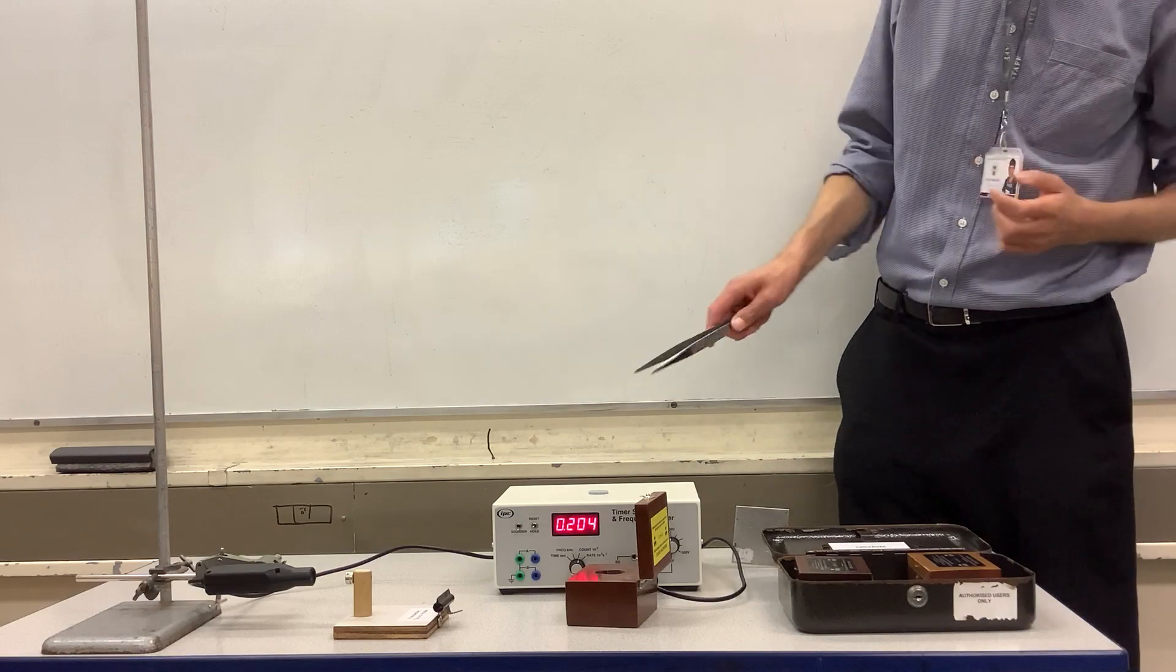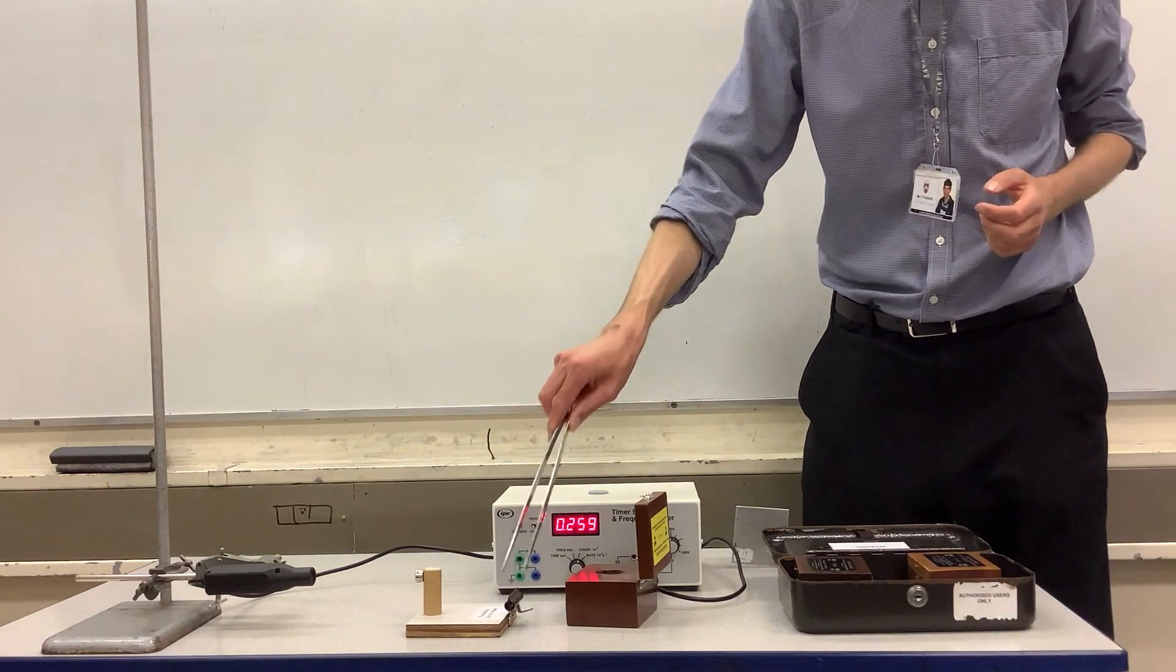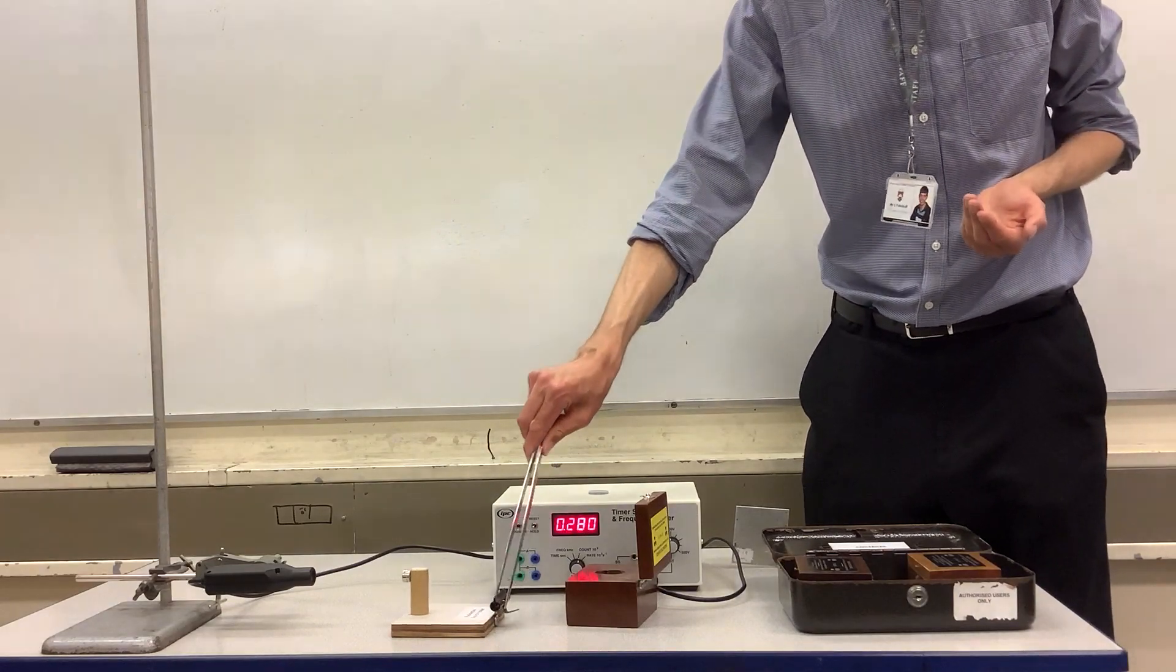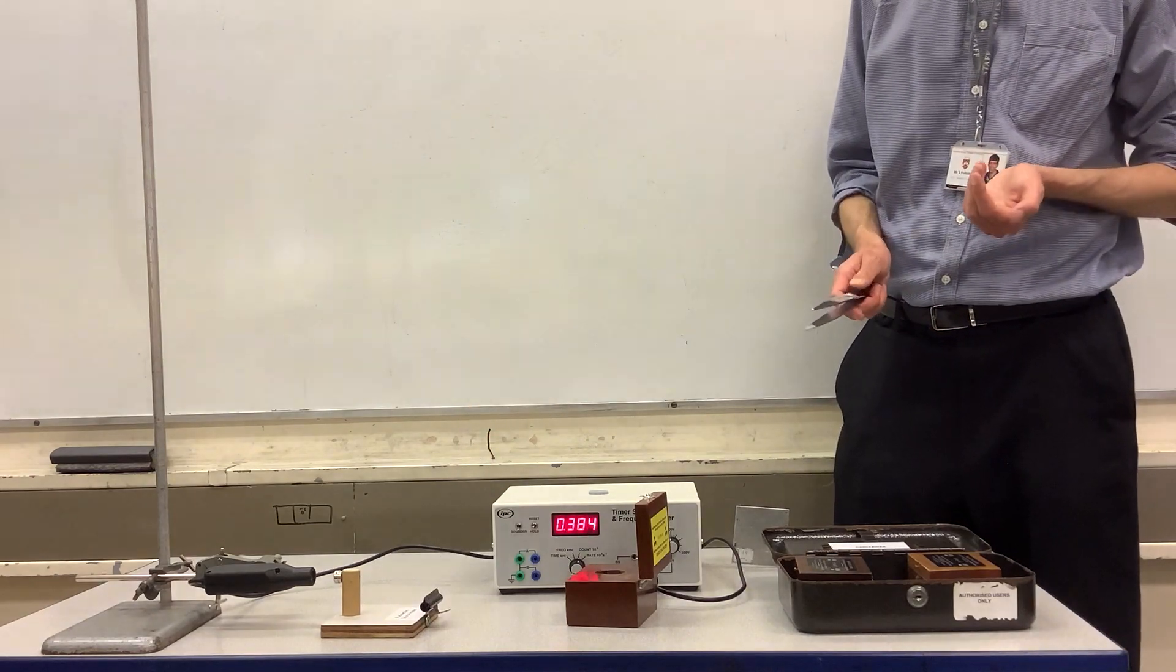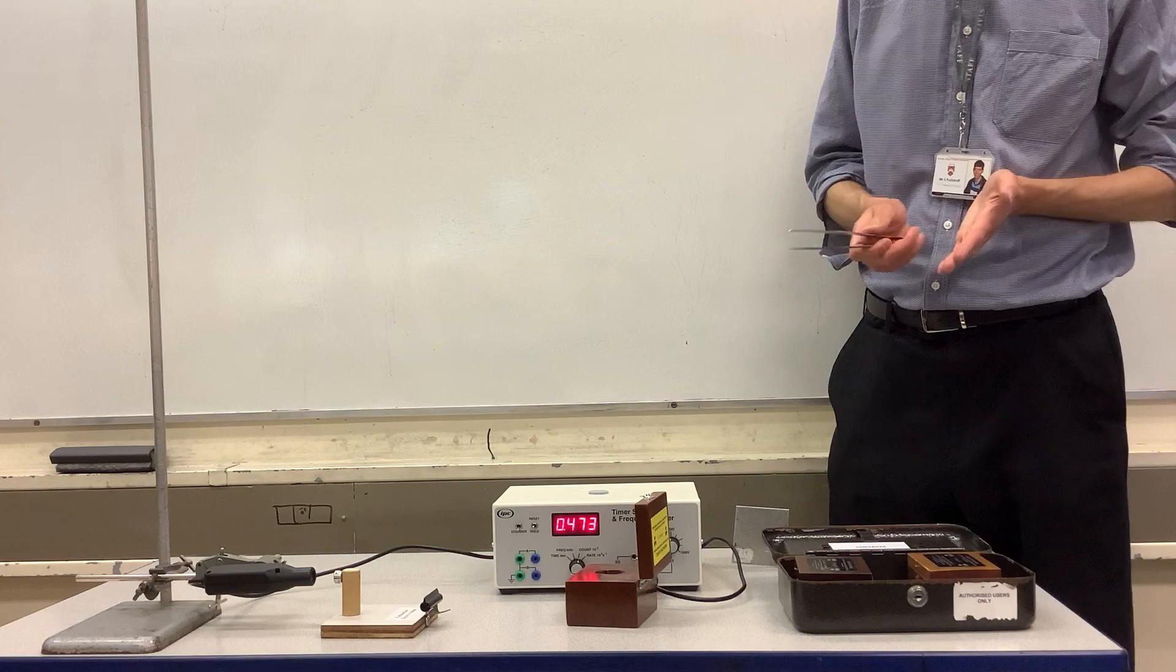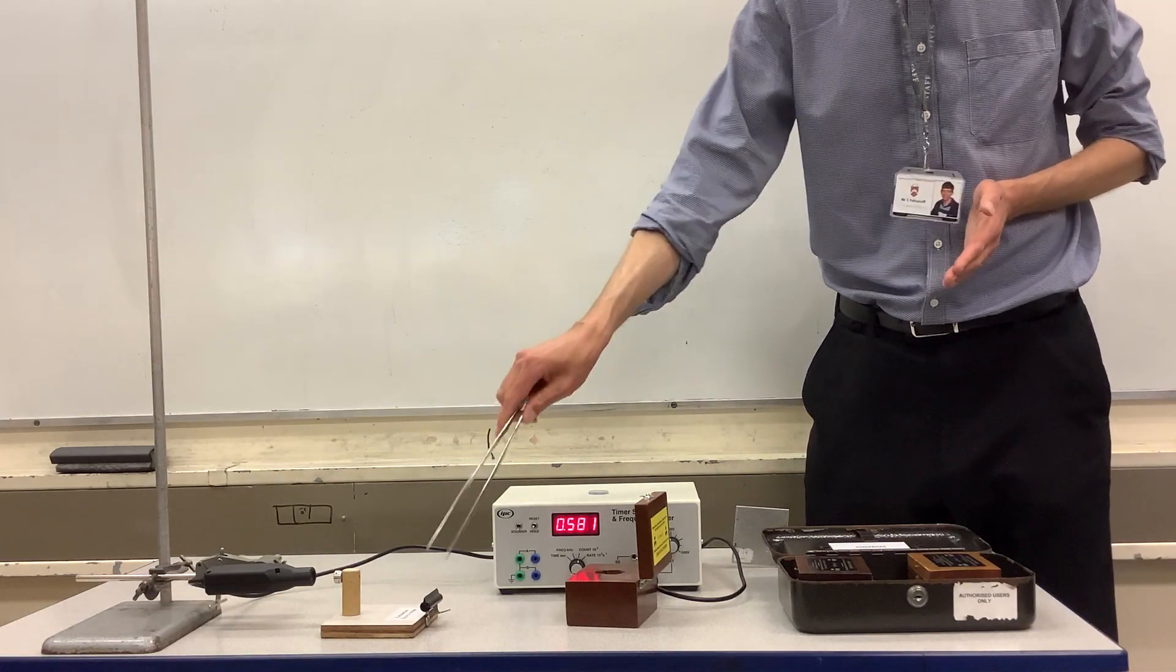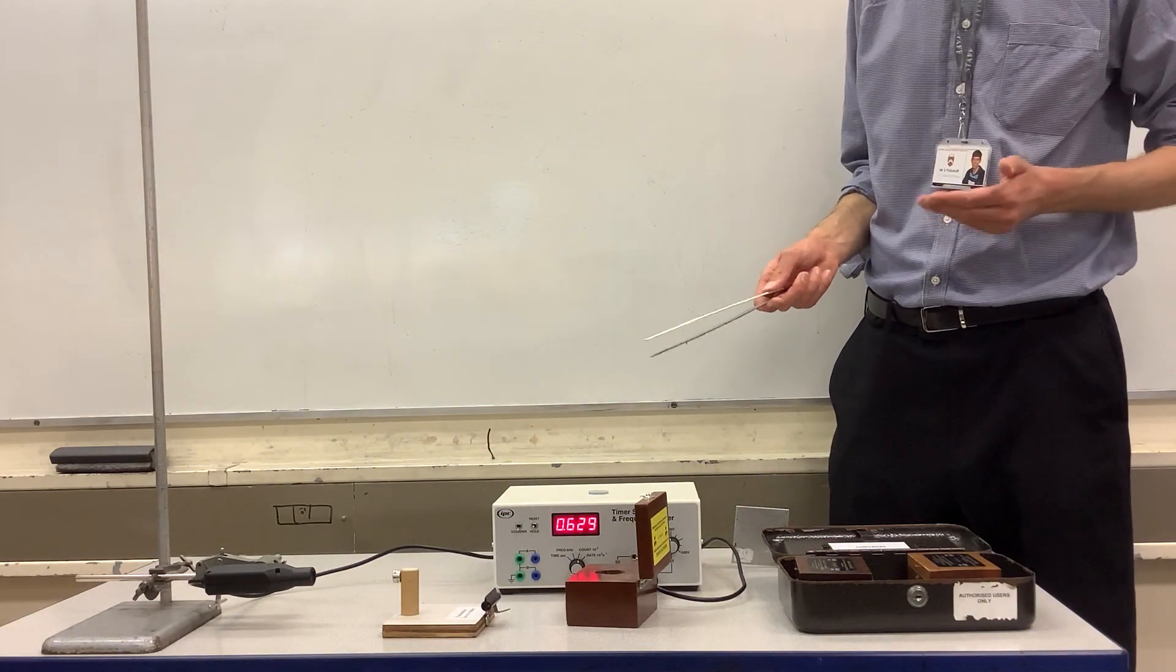One thing you'll notice is that if you move the cobalt-60 source further away, you get less radiation detected, and if you move it closer, you get more. With gamma radiation, that's almost entirely due to the fact that it spreads out in lots of different directions, so if it's further away, more of the radiation actually misses the tube.